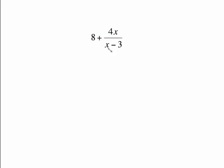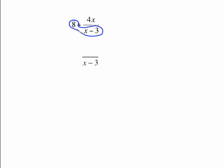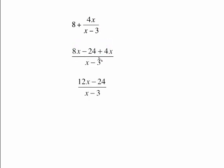To convert, keep the denominator of x minus 3 and multiply the whole number times the entire bottom, distributing as needed. 8 times the whole denominator gives 8x minus 24, plus the existing numerator 4x. Combine like terms: 8x plus 4x is 12x minus 24 over x minus 3. Check for factoring — you can factor a 12 out of the numerator, but these are not identical binomials so nothing cancels. Either form is an appropriate answer.